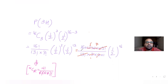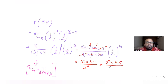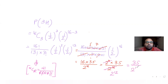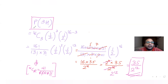After cancellation we are left with 16 × 35 / 2^16. Writing 16 as 2^4, we get 2^4 × 35 / 2^16, and 2^4 cancels with 2^16 to leave 2^12. So the answer is 35 / 2^12.